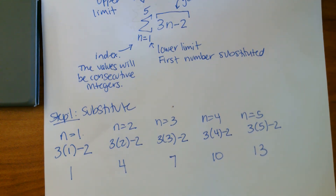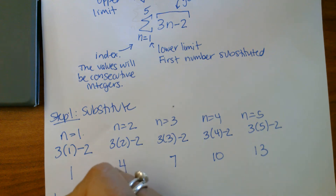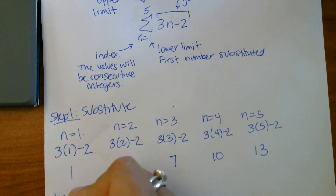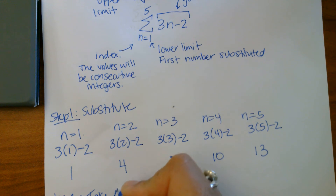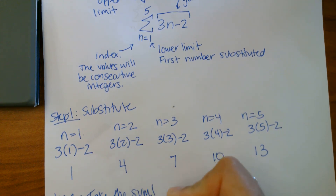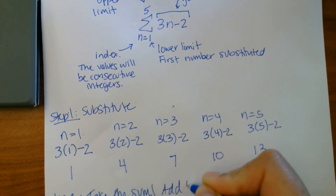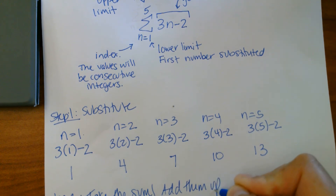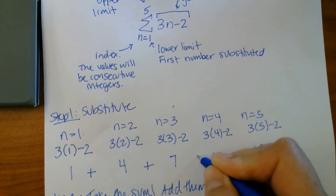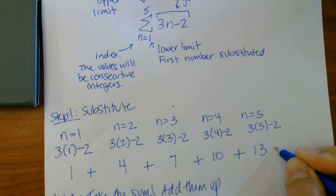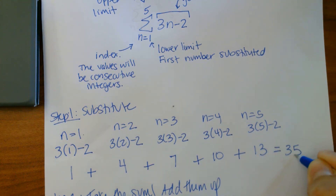And so now what we need to do is add up all these numbers — we need to find the sum, which is what sigma represents. So that's step two: take the sum, add them up. So we're going to do one plus four plus seven plus ten plus thirteen, and we're going to get thirty-five.